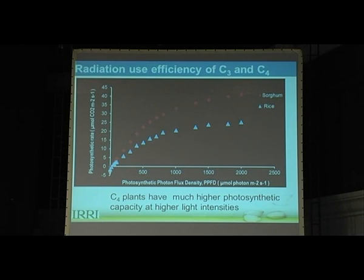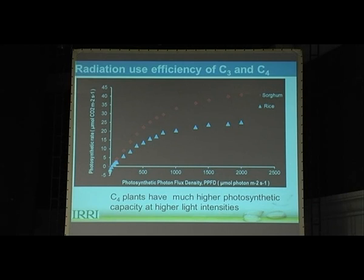One of the major differences between C3 and C4 plants is radiation use efficiency. In case of C4 plants, like sorghum shown in red, photosynthesis increases with the increase in light intensity. On the x-axis you can see the change in photosynthetic photon flux density, which is basically the light intensity, and the C4 photosynthetic pathway continues increasing.